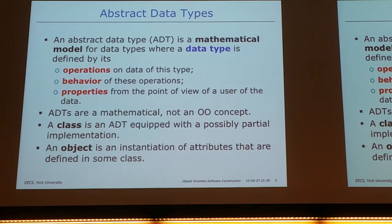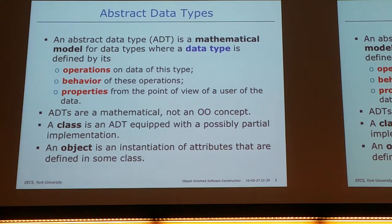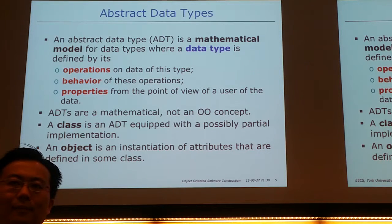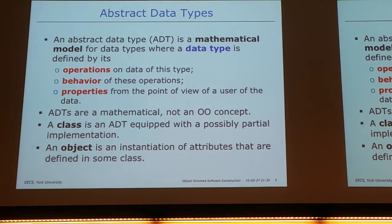Properties are something you may not have seen before. Imagine a stack supporting only push and pop — what kind of property would you expect? For example, if I push something into the stack and do an immediate pop, I get the original stack back. A student suggests: if you push into a full stack, you shouldn't be able to. That's a precondition — it belongs to the behavior part of the ADT, not exactly a property. A property is more like an equation. ADT is mathematical, not object-oriented.